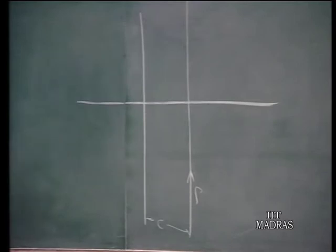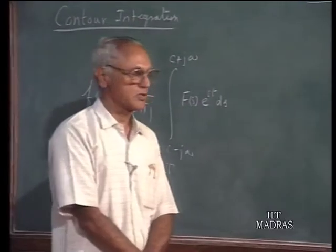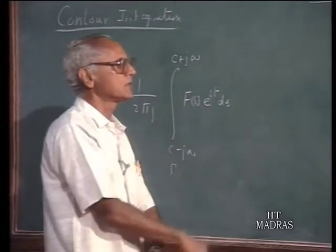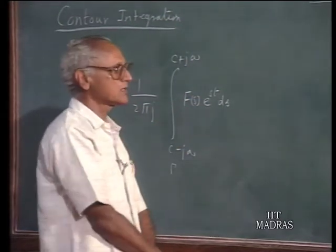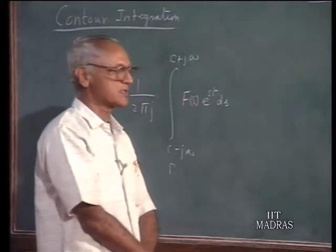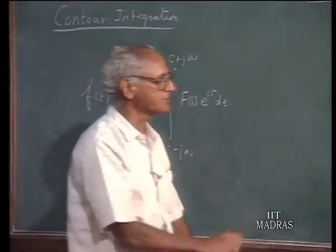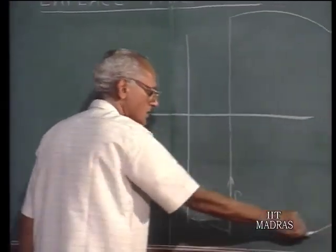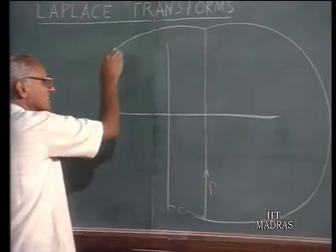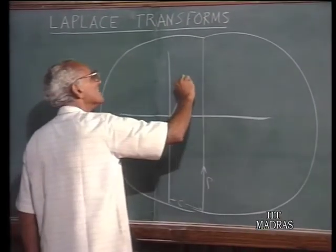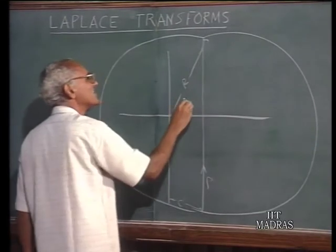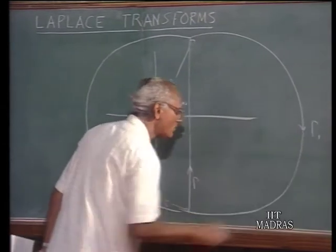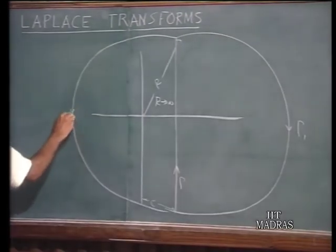It is easy to evaluate the integral along a closed contour in the complex plane, because from the theory of residues, integration over a closed contour equals 2πj times the residues of the poles inside the contour. What one does is to close this by means of two large semicircles where r tends to infinity. Let me call this gamma 1 and this gamma 2.